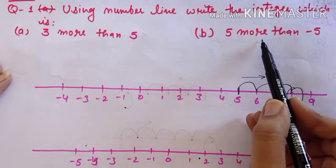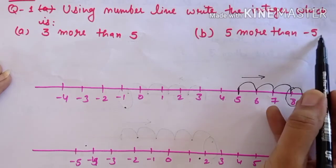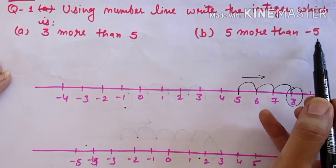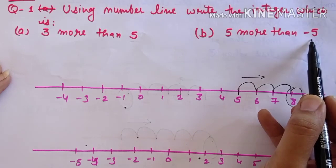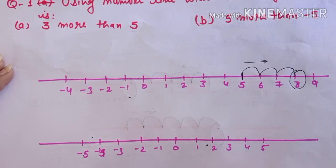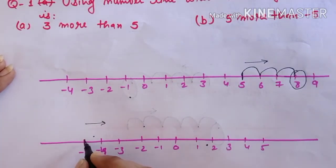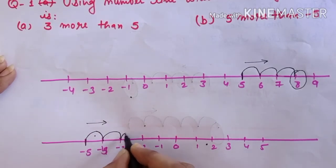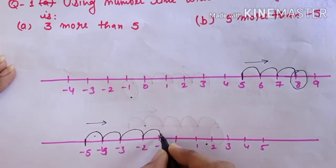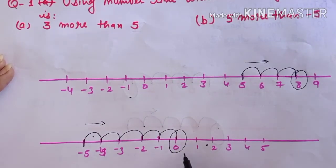Next part: 5 more than minus 5. We mark minus 5 on the number line. '5 more than' means add, so we move right side 5 steps: 1, 2, 3, 4, 5. Our answer is 0.